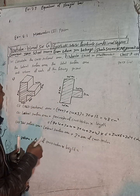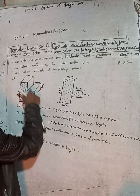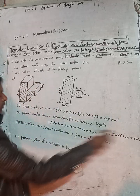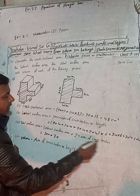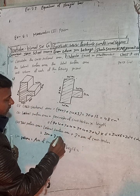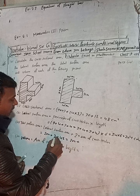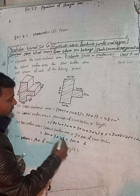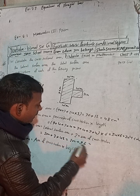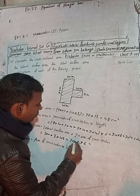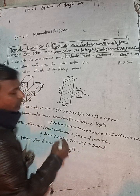Now we have to find the total surface area. Total surface area formula is: lateral surface area plus 2 times the area of cross-section. That is 204 plus 2 × 48 = 204 + 96 = 300 cm². This is the correct answer — 300 cm².